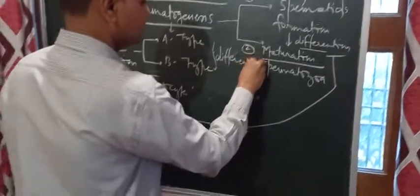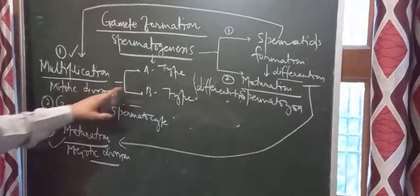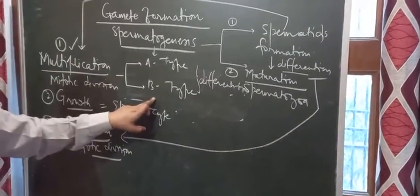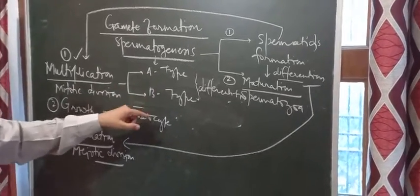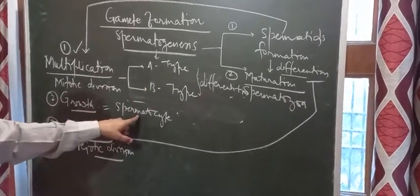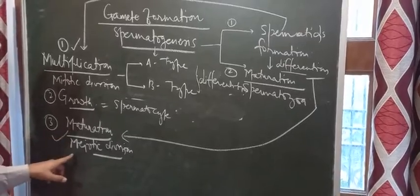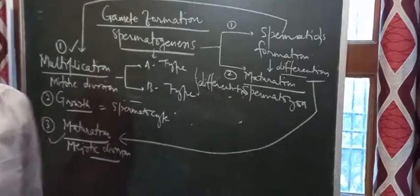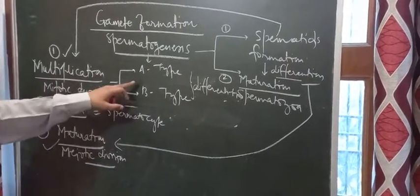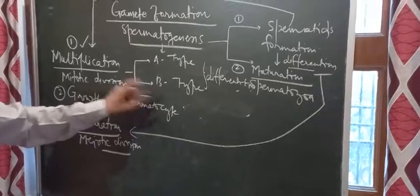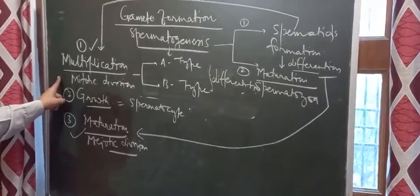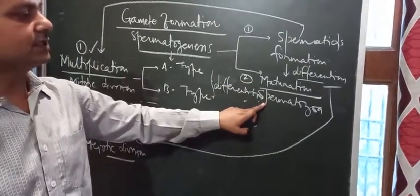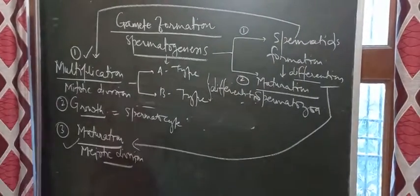The first differentiation is the bifurcation of spermatogonia into type A and type B. Type A are stem cells, and type B are the actual mother cells which will grow to form a primary spermatocyte, then mature to form spermatids, and then the spermatids differentiate to form spermatozoa. So one differentiation occurs at multiplication and the next after the spermatids are formed.